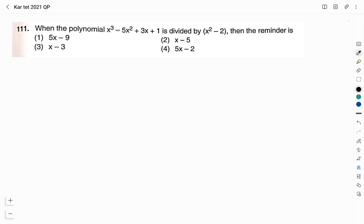When the polynomial x cube minus 5x square plus 3x plus 1 is divided by x square minus 2, then the remainder is option 1: 5x minus 9, option 2: x minus 5, option 3: x minus 3, option 4: 5x minus 2. Here you can use the normal division method of the polynomial or else you can apply remainder theorem as well. First I will explain you the division method for polynomial.